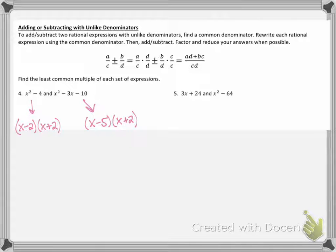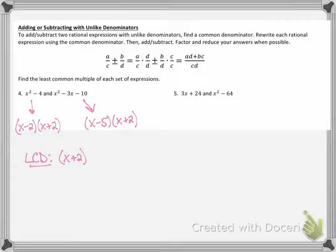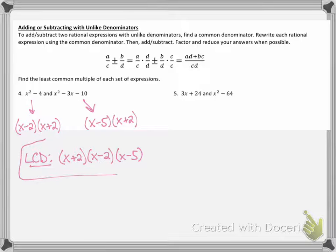If we were finding greatest common factor, we'd say they have an x plus 2 in common and be done. But the least common multiple means we need to make sure everything gets every piece. Both expressions have a factor of x plus 2, so part of my LCD is x plus 2. But to find a common multiple, we need all factors involved. The first expression also had x minus 2, and the second had x minus 5. So my least common denominator is x plus 2 times x minus 2 times x minus 5.